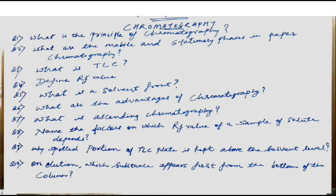The next question: on elution, which substance appears first from the bottom of the column? The substance which is least absorbed by the adsorbent comes out first from the column. And the substance which will come out last is the one that is most strongly absorbed by the adsorbent in the column.